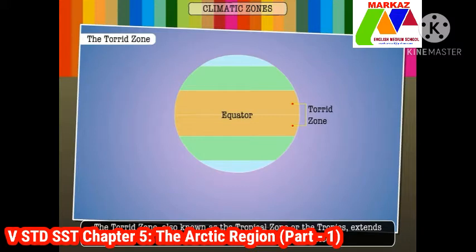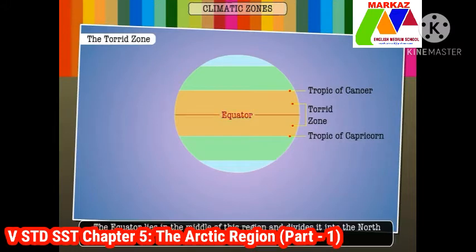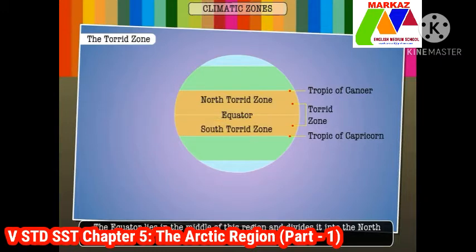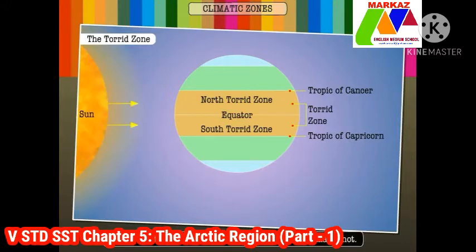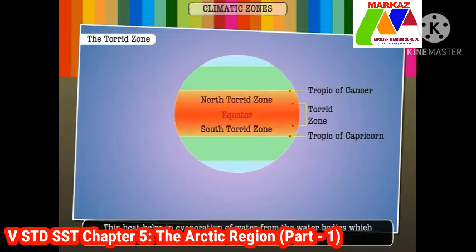The torrid zone, also known as the tropical zone or the tropics, extends from the Tropic of Cancer to the Tropic of Capricorn. The equator lies in the middle of this region and divides it into the north torrid zone and the south torrid zone. The north torrid zone lies between the equator and the Tropic of Cancer, and the south torrid zone lies between the equator and the Tropic of Capricorn.